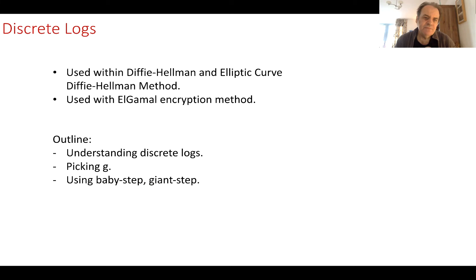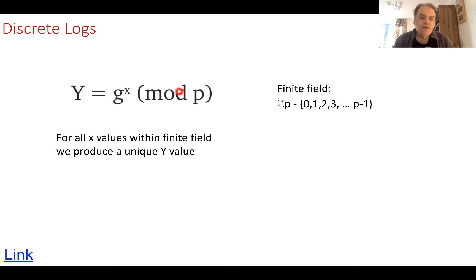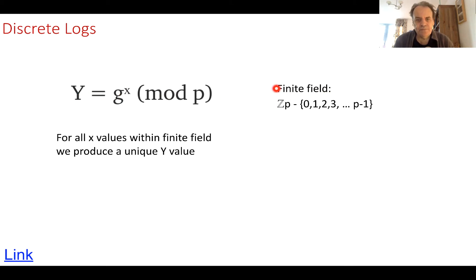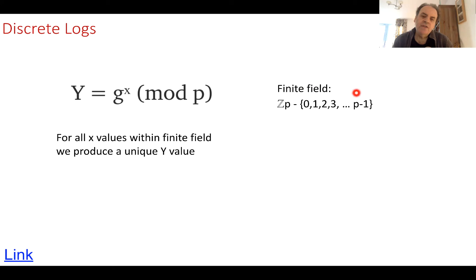The standard format for discrete logarithms is G to the power of X mod P. What makes it discrete is that we bring in the mod P operation. We have G, the generator, to the power of X, mod P, which gives us Y. This is defined as a finite field because of the mod operation — the remainder after dividing G^X by P — so we only get values between 0 and P minus 1, making it cyclic in nature. We can still perform normal mathematics — add, subtract, multiply, divide — as long as we apply mod P.